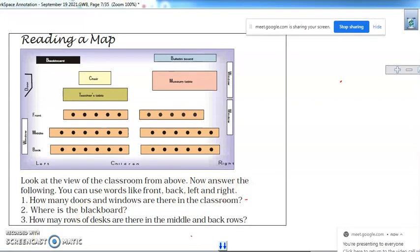How many doors and windows are there? Three windows. One window, second window. Three windows are there and one door is there.